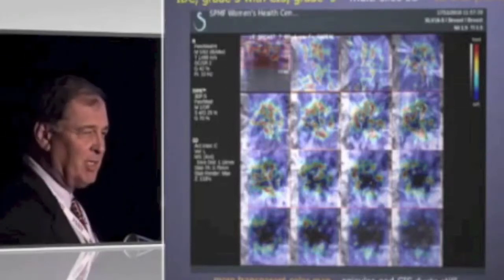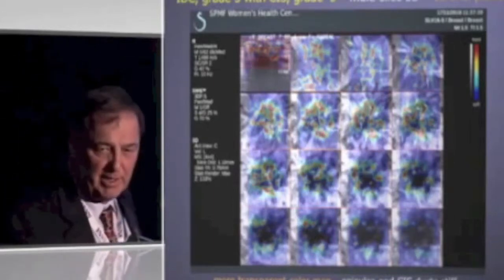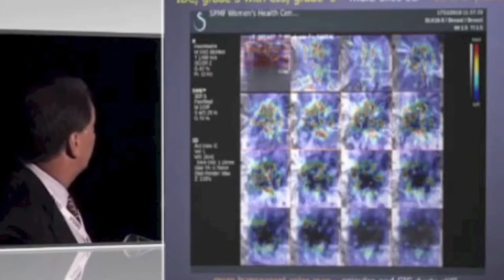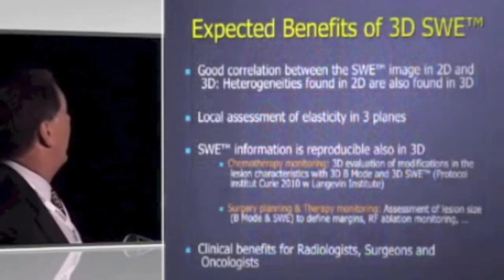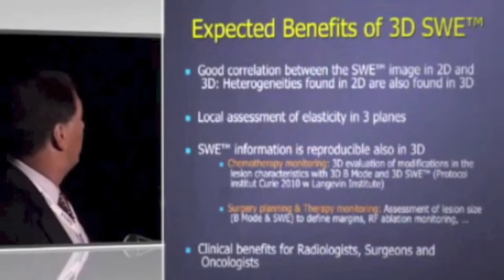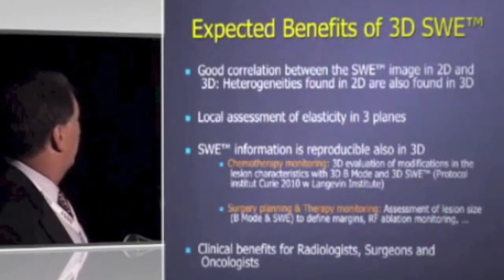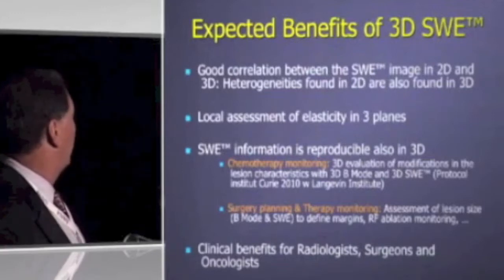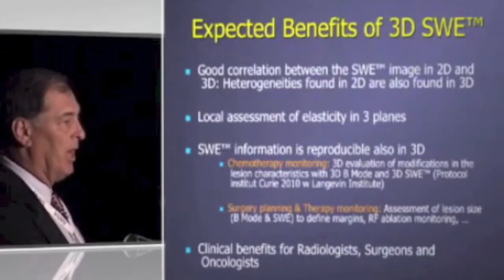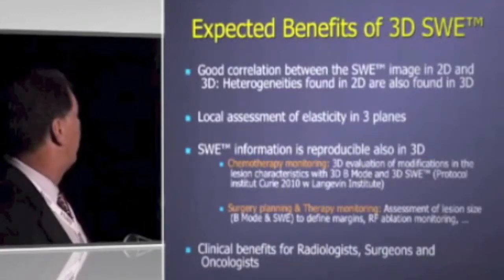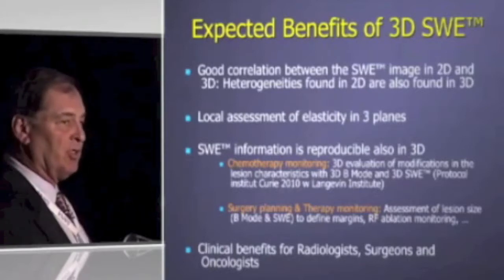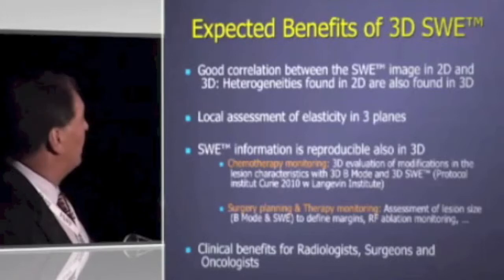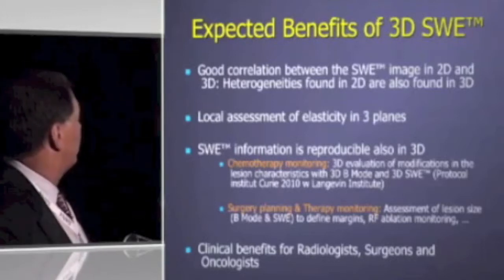Why should DCIS be stiff? Because of the periductal desmoplasia around it — it's that desmoplastic response that makes them stiff. We expect to see good correlation between the 3D and 2D images, and we do. We can see the elasticity stiffness in multiple planes, and we think that will be helpful in monitoring the response to chemotherapy and also in surgical assessment for extent of disease and the type of surgery or treatment that would best suit the patient.